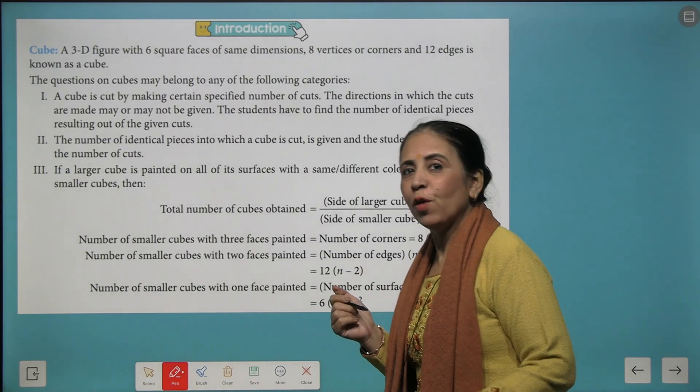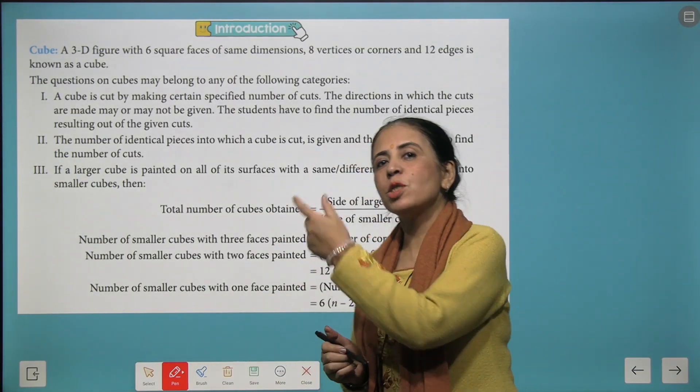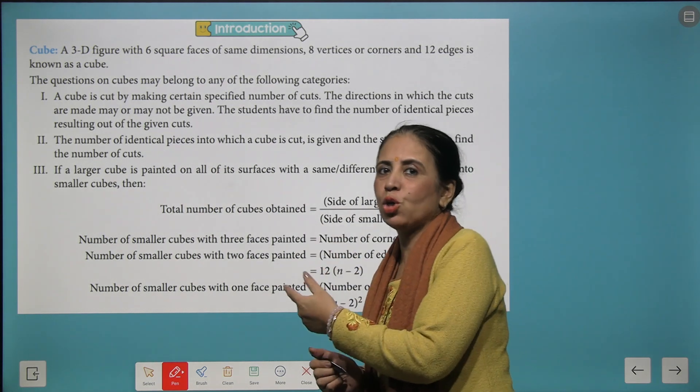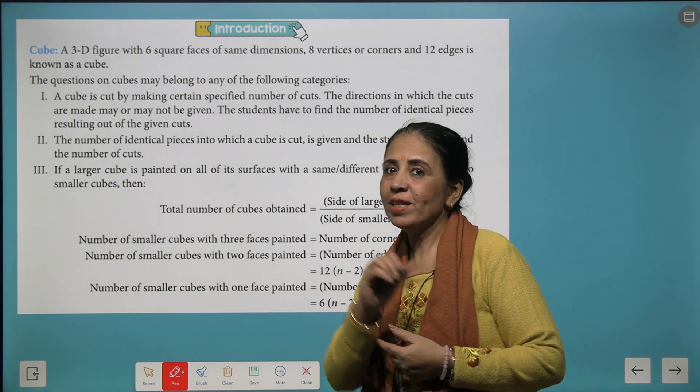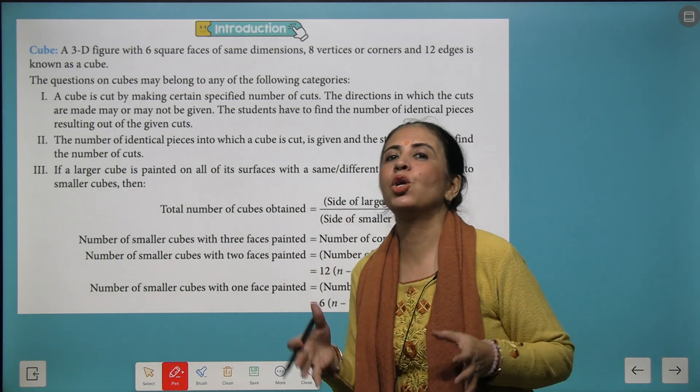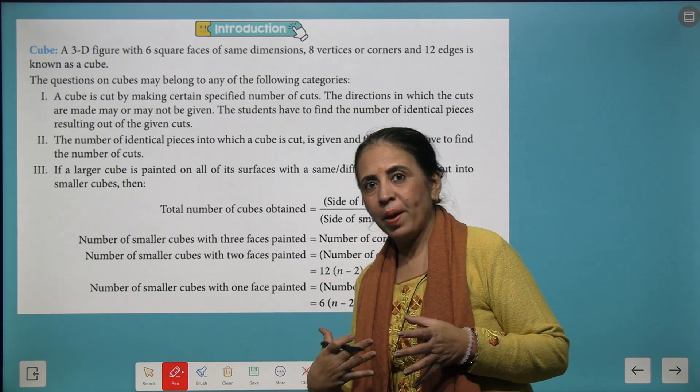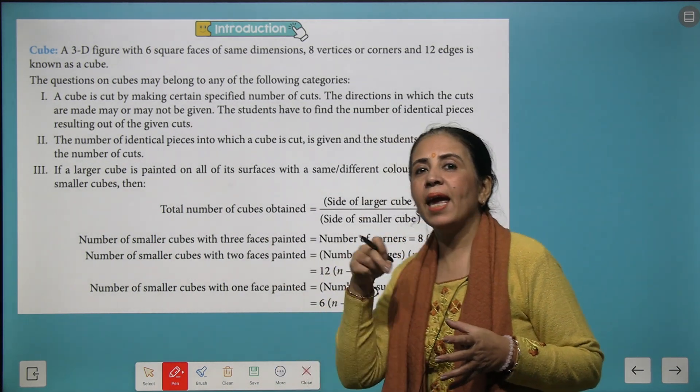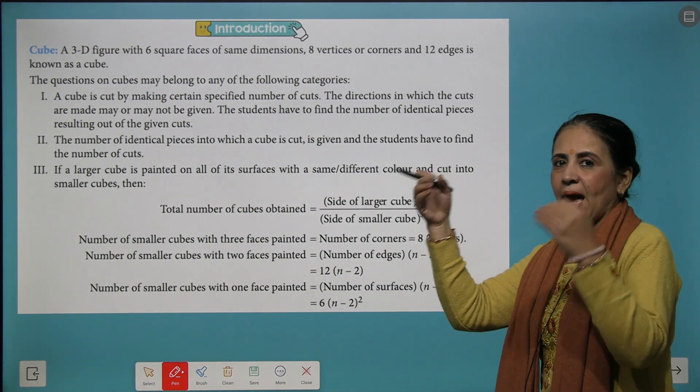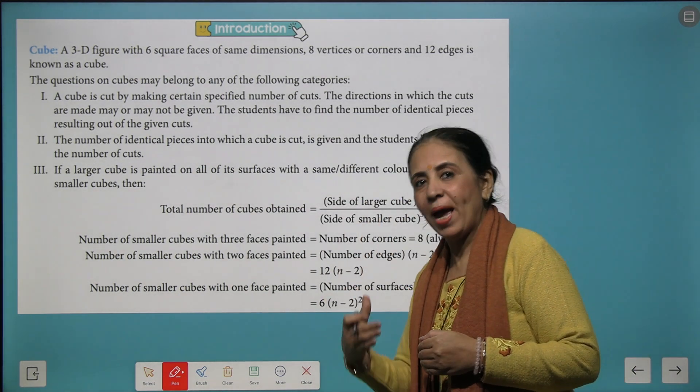Now we'll talk about the variety of questions that you will come across when you solve the questions based on cubes and nets. So first thing you need to remember is that cube has 6 faces, it has 8 vertices and 12 edges.